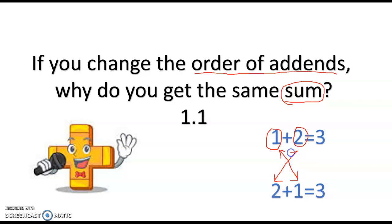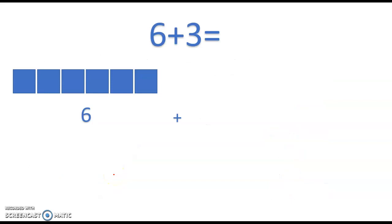Let's talk about why. I have the problem 6 plus 3 equals blank. I can count up starting with 6. If I count up 6 and add 1, 2, 3, we have 6, 7, 8, 9.